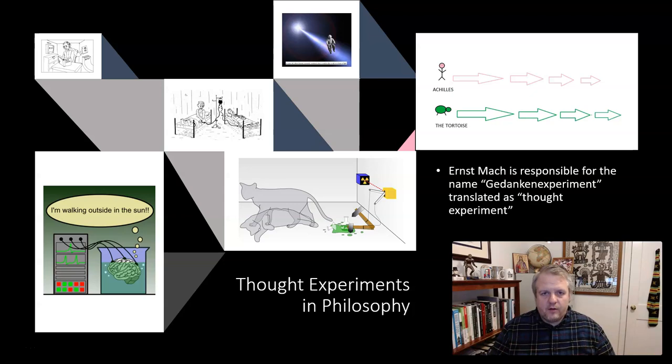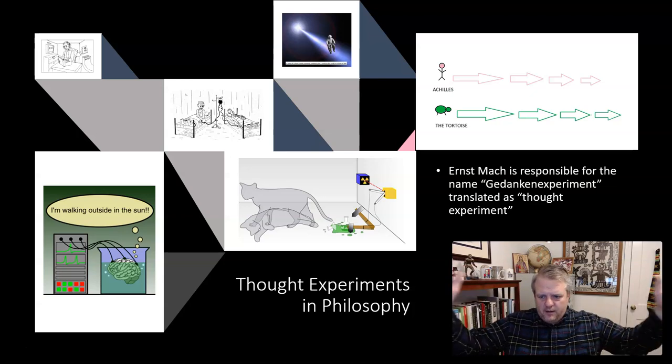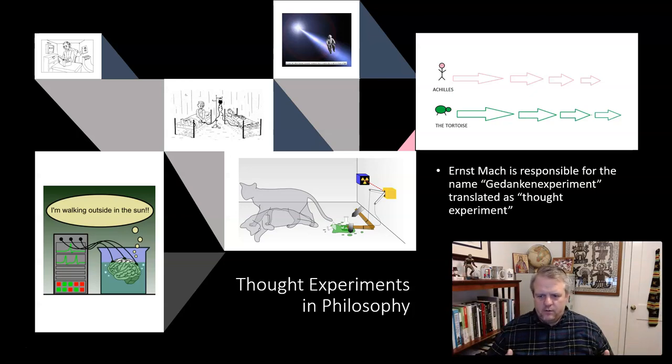So locomotion, movement about your space, is not possible. Well, but clearly I can move. So what's going on here? These are just some early thought experiments that we encounter in pre-Socratic philosophers. And Zeno is not the only one by any means.